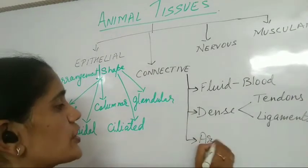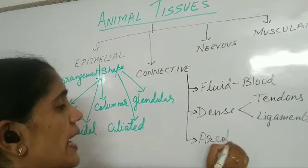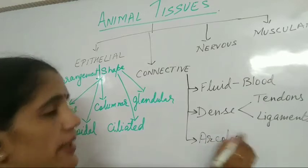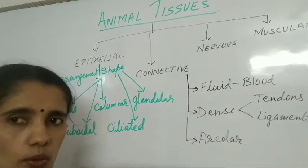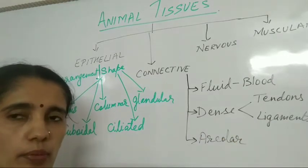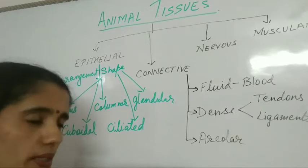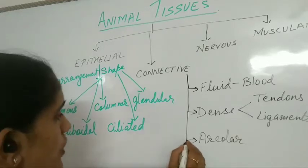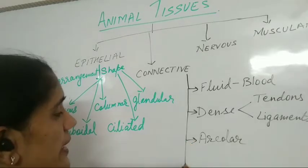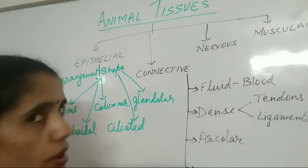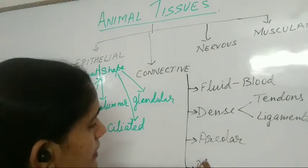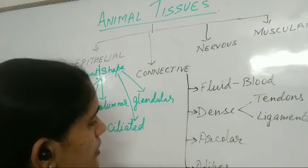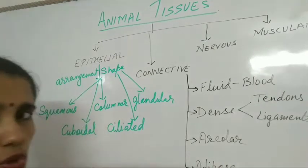Next is areolar tissue. Areolar means air space is present — it is present between the spaces of internal organs. Next is adipose tissue. Adipose tissue helps in the deposition of fats.